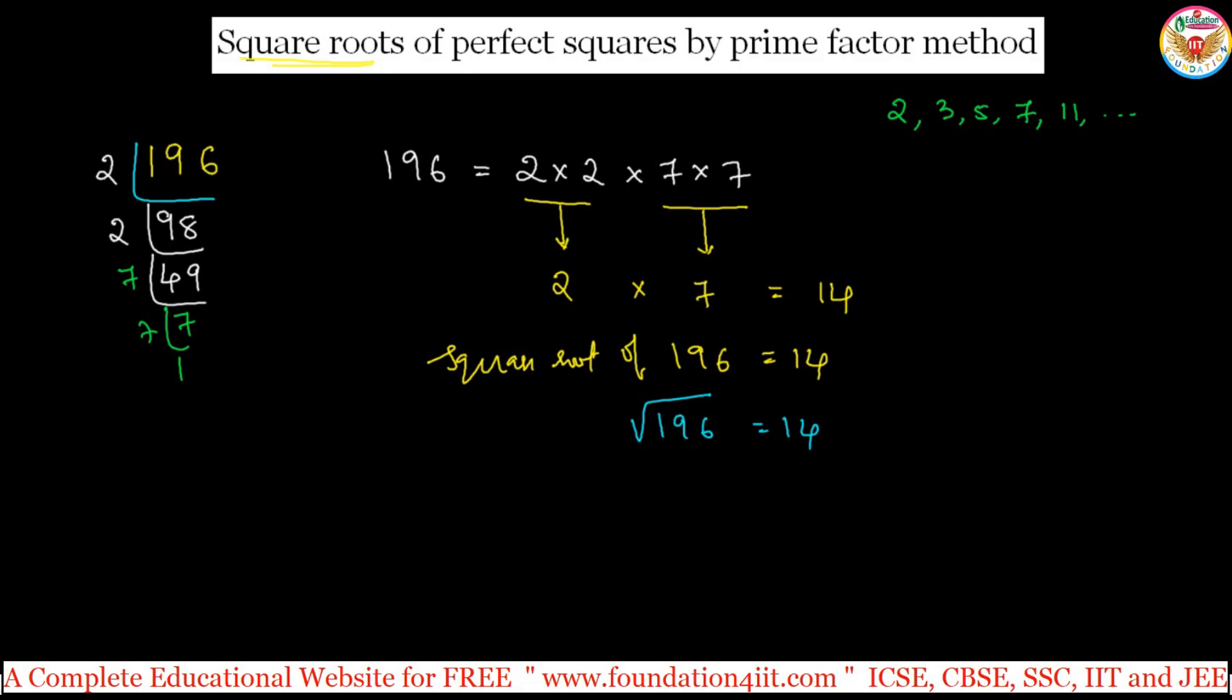Let's take one more example, small numbers only, say 576. Always take, if it is even number, exactly go with 2 table. 576 is the perfect square, to find out the square root of this.